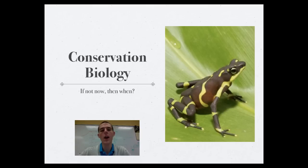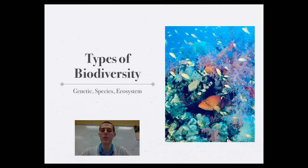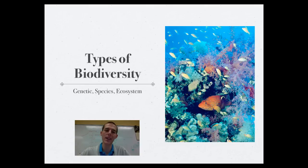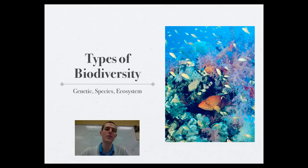Going forward, we're going to start out by talking about the types of biodiversity. There are essentially three levels that ecologists look at when assessing the health of an ecosystem. The first is the genetic level — all the genetic material within an ecosystem. The greater the genetic diversity, the more raw material there is for evolution, making it more resistant to disaster and disease.